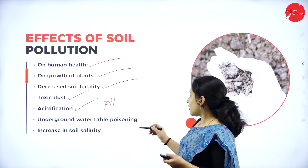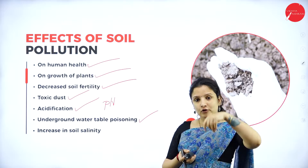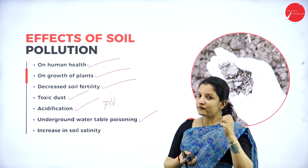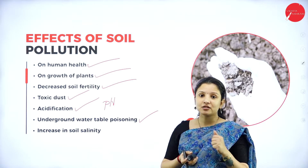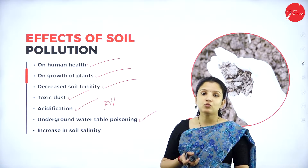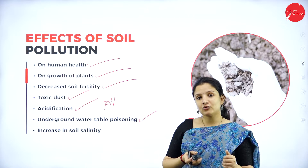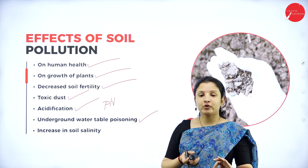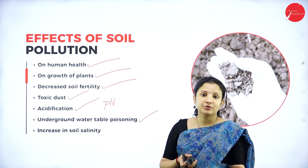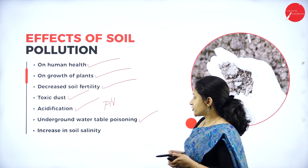Soil pollution can poison the underground water table. Just as pouring water onto soil causes it to be quickly absorbed, toxic chemicals similarly get absorbed with water and stored in the underground water table. If the underground water table is polluted, nearby wells and bore wells can get polluted too. When human beings consume such water, a lot of health effects will be seen.